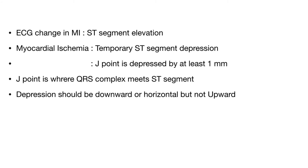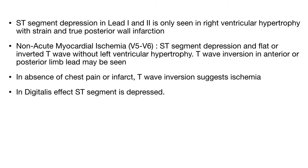Only if the J-point sloping is more than 2 mm may an upward-sloping ST segment be considered pathological. As with myocardial infarction, changes in leads I, aVL, and V4 to V6 indicate ischemia of the anterior wall, and changes in leads II, III, and aVF indicate ischemia of the inferior wall. If more than one coronary vessel is blocked, changes are seen in many leads. Importantly, ischemic changes are never seen in leads V1 and V2 — ST depression there is only seen in right ventricular hypertrophy with strain and in true posterior wall infarction.